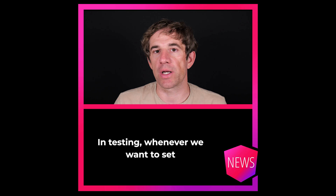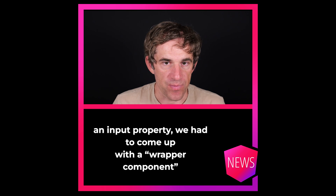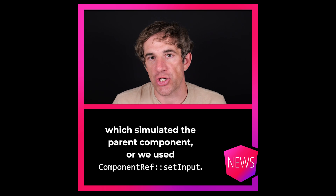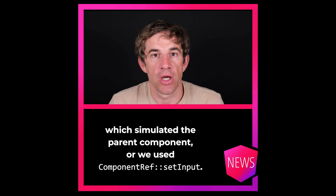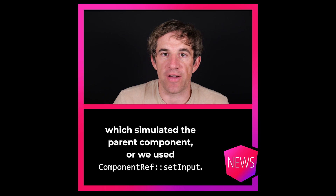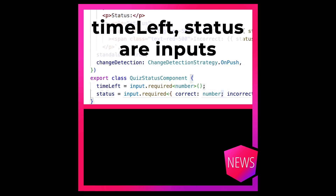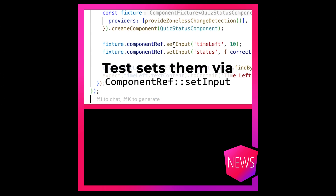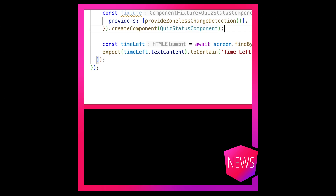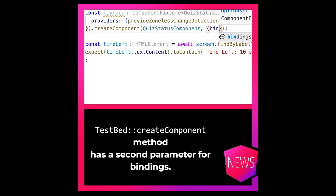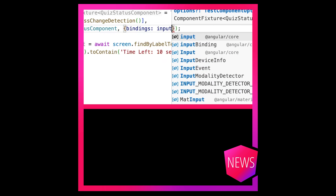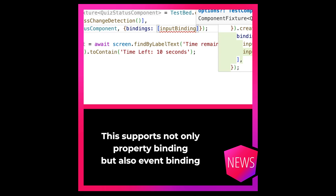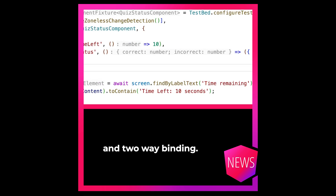In testing, whenever we wanted to set an input property, we had to come up with a wrapper component which simulated the parent component, or we used the componentRef's setInput. Now, the testbed's createComponent method has a second parameter for bindings. This supports not only property binding, but also event binding and two-way binding.